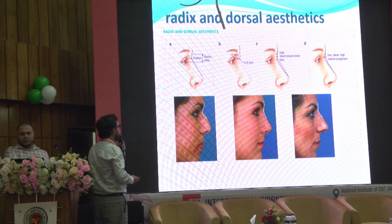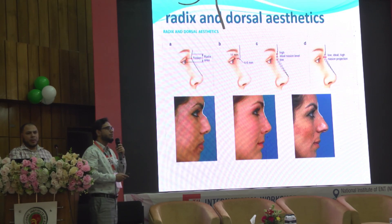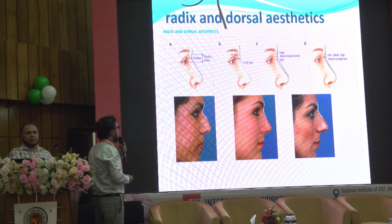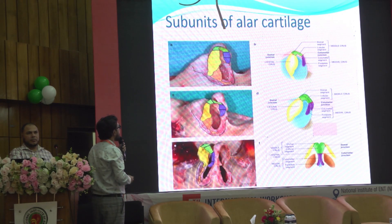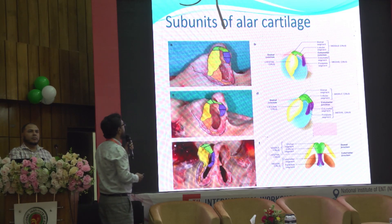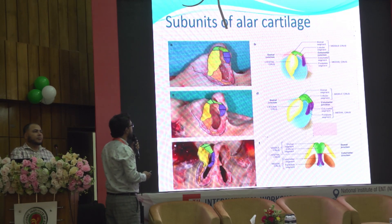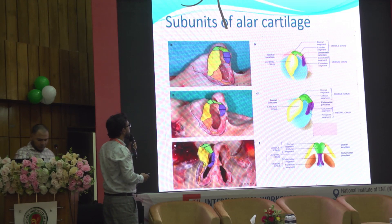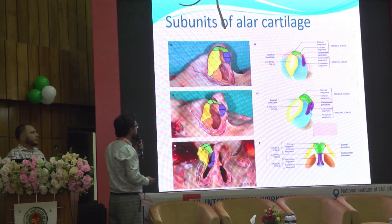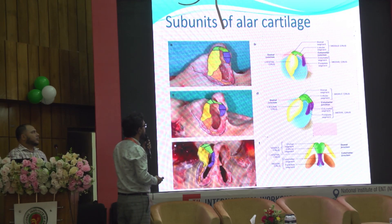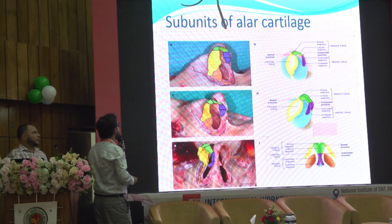The nasofrontal angle is about 115 to 130 degrees for aesthetic purposes. The lower lateral cartilage has three parts: the lateral crus, medial crus, and middle crus. The medial crus has a footplate segment and columellar segment; the middle crus has a domal segment; and the lateral crus forms the lateral wall.